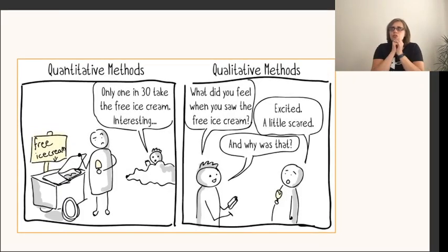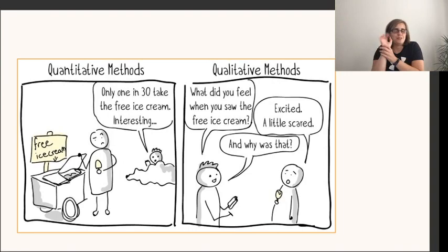So this is how I would explain the difference between the two. If you have free ice cream and you use counting statistics and you find out that one in 30 people take a free ice cream, do you know why only one in 30 people take a free ice cream? So qualitative work is what gives you the why. We can make lots of observations, but to try and piece them and link them together and really get that insight into the human psyche of behavior and cognitive processing, qualitative stuff is where you're going to get the biggest bang for your buck really in terms of answering that why question.